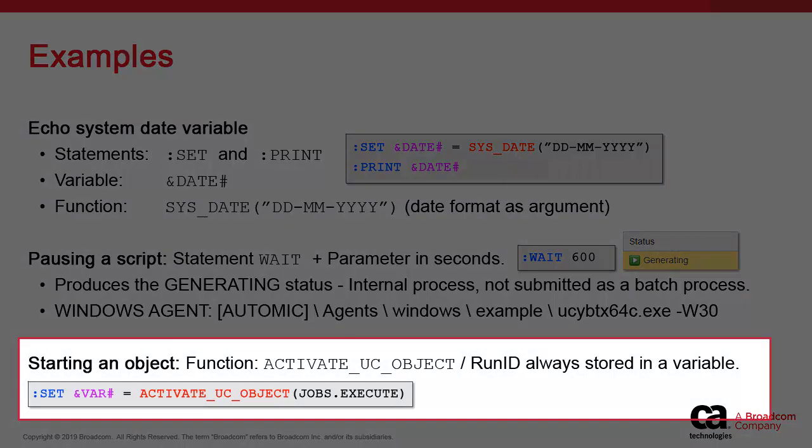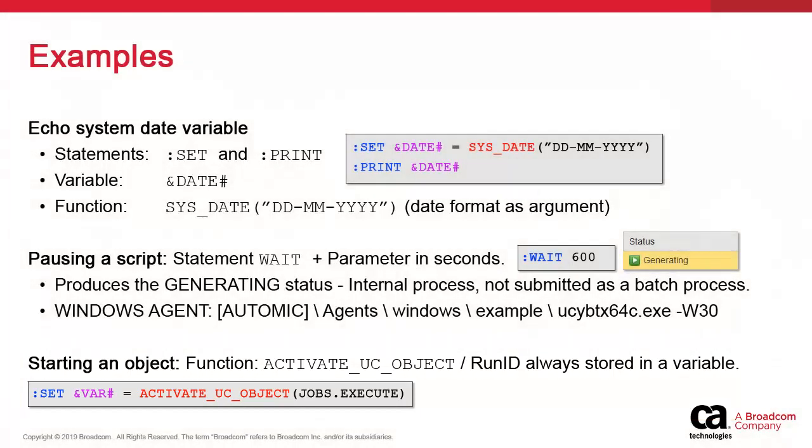We can execute objects with the activate UC object function. The set command sets a variable to the activate function and captures the task run ID. As an argument to the function, you indicate the name of the object you wish to execute.